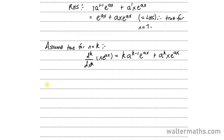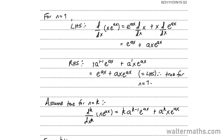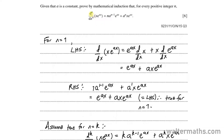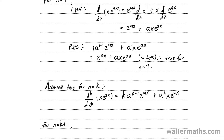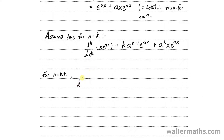We now want to prove for n is equal to k plus 1. For n is equal to k plus 1, in the original formula we are substituting k plus 1 for n. So that means we'll be having d to the k plus 1 by dx to the k plus 1 of x e to the ax. We want to see if this is going to be true for n is equal to k plus 1.